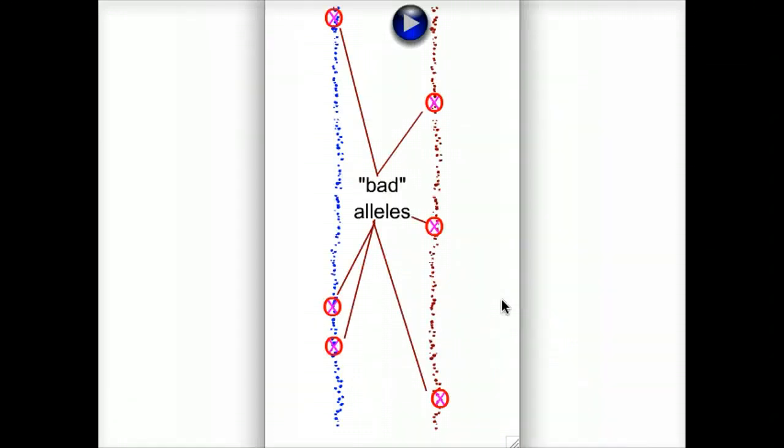One advantage of recombination is that it can be used to exchange alleles to generate chromosomes with new patterns of alleles, new versions of genes in different combinations. This can be very useful to remove deleterious alleles from a population.